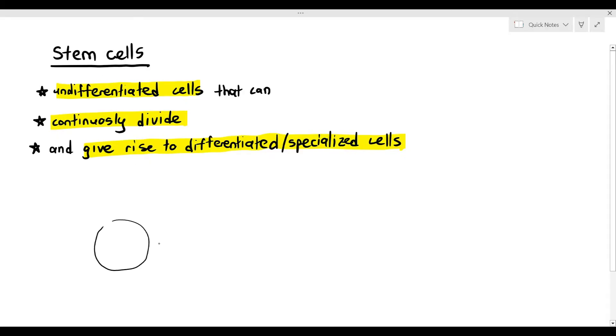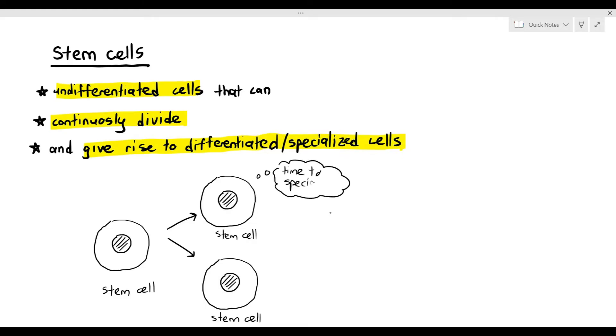A stem cell is basically a cell that does not have a specialized function, other than to just divide by mitosis and to differentiate or specialize. As you can see, the first stem cell at the top there, once it undergoes cell division, it differentiates to become a relay neuron.